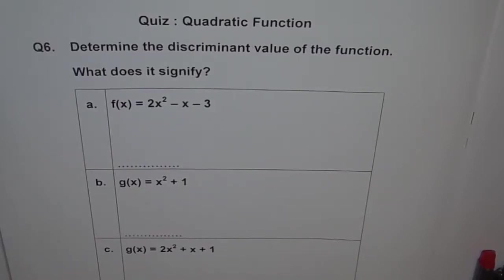Here is question number 6 for our quiz on quadratic function. It says, determine the discriminant value of the function. What does it signify?